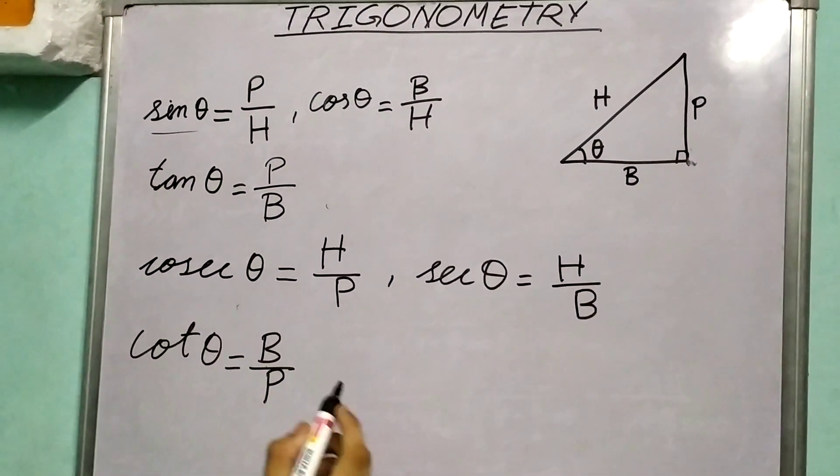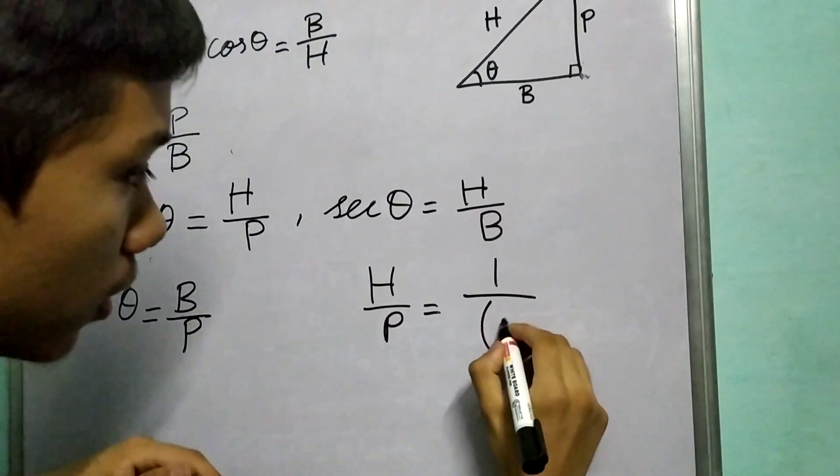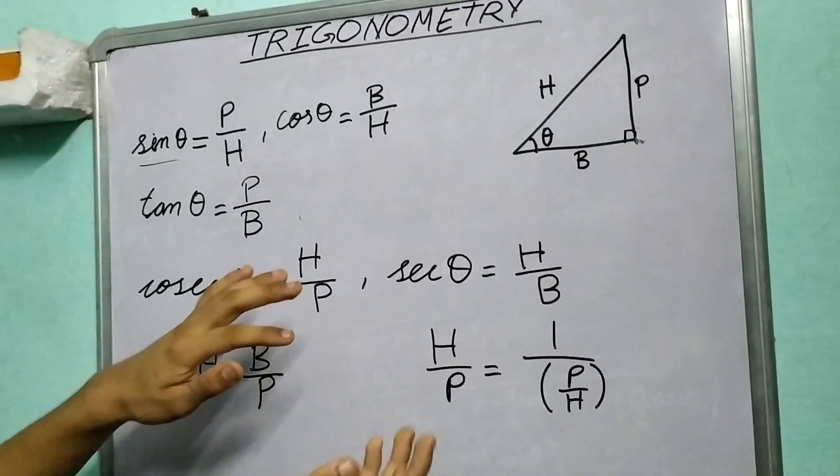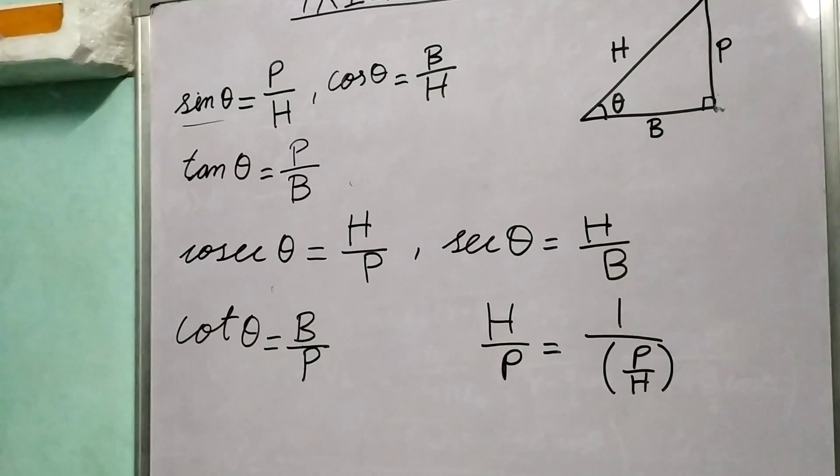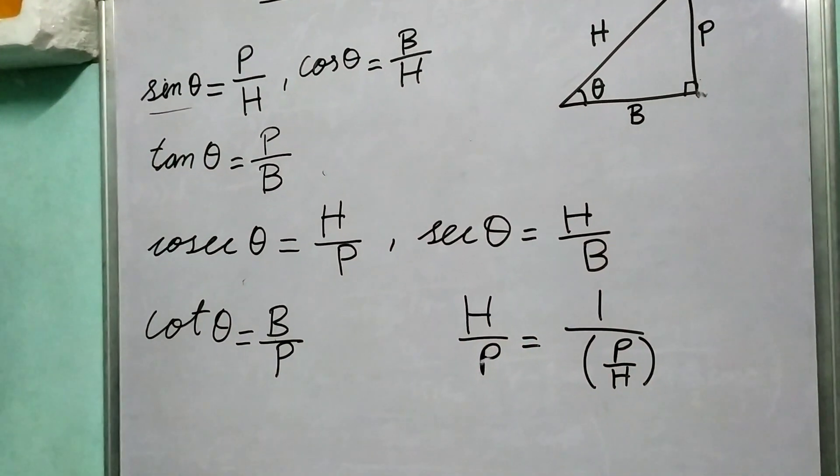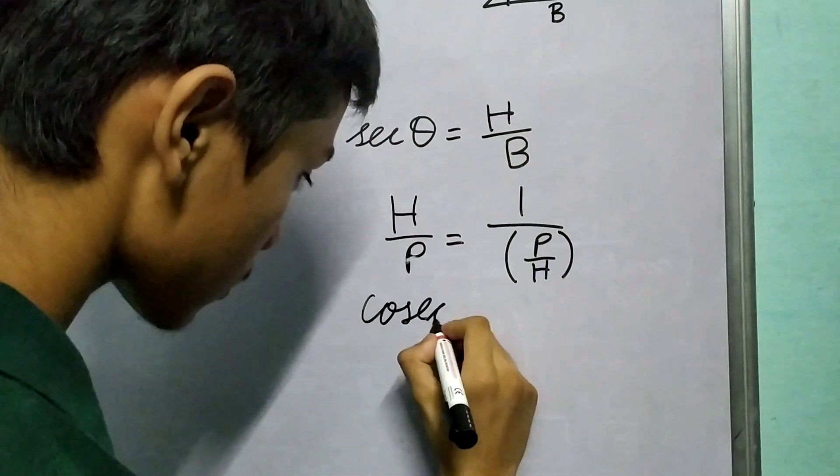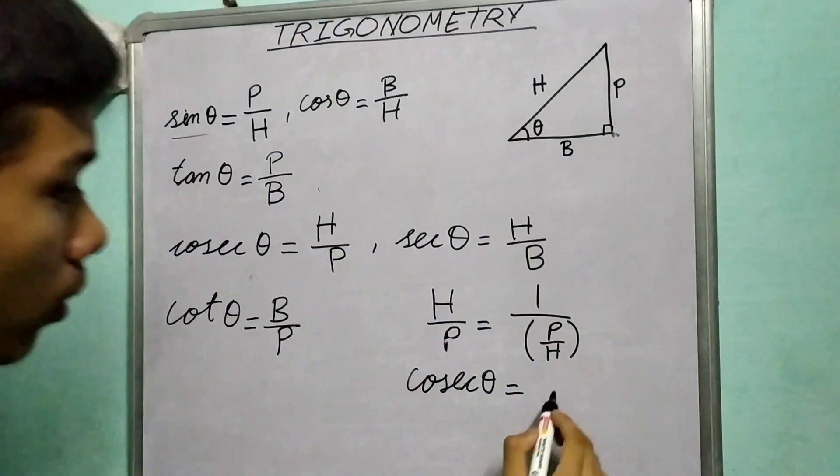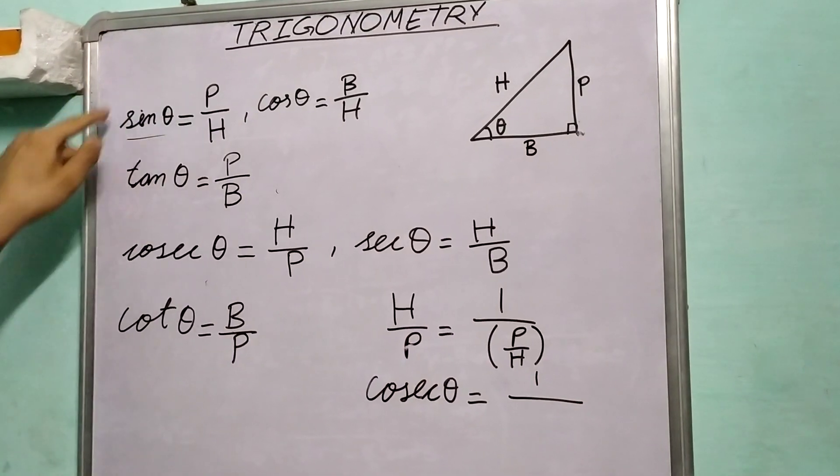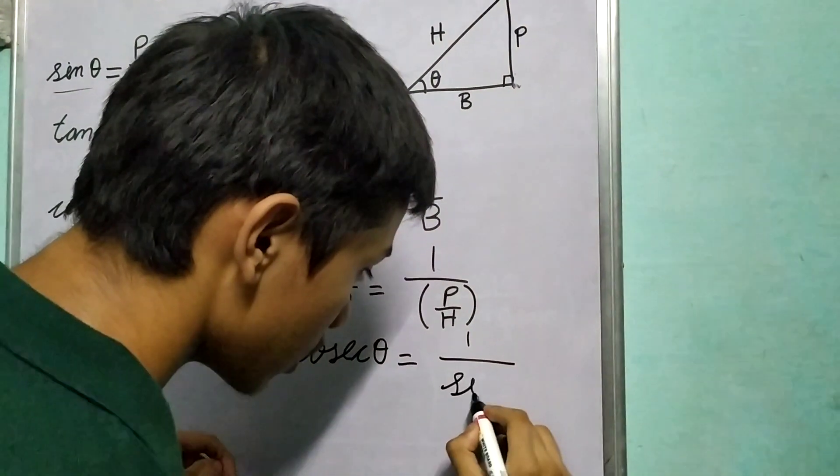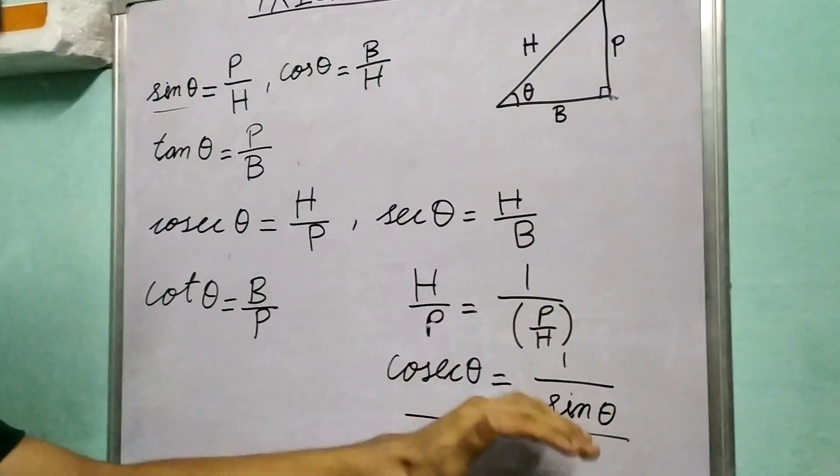So we can write H upon P is 1 upon P upon H, because we are taking the reciprocal of both sides. Now what is H upon P? H upon P is cosec theta, and 1 upon P upon H is 1 upon sin theta. So we get one relationship that cosec theta is 1 upon sin theta.